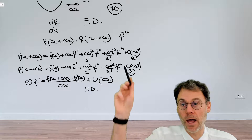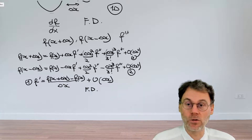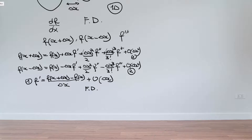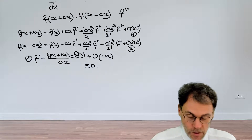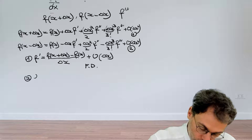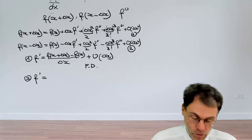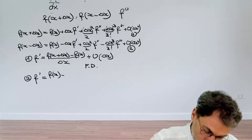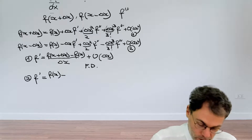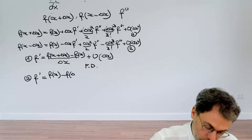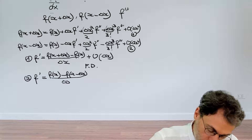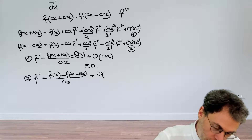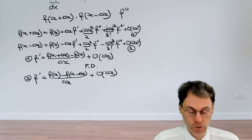Just for fun, pause the video and do the same thing with equation 2. In that case you get the so-called backward difference approximation, where instead of looking towards the future you nostalgically look towards the past — using f(x − Δx) in your formula. Otherwise it looks the same and has the same first-order scaling behavior with respect to Δx.